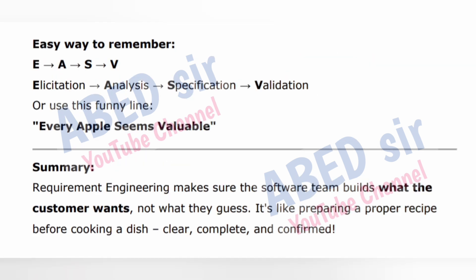Easy way to remember: EASV — Elicitation, Analysis, Specification, Validation. Or use this funny line: 'Every apple seems valuable.' Summary: Requirement engineering makes sure the software team builds what the customer wants, not what they guess. It's like preparing a proper recipe before cooking a dish — clear, complete, and confirmed.